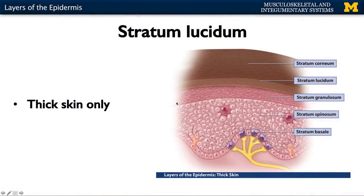In thick skin only, you have the stratum lucidum. This is a fairly nondescript layer, usually three to five layers of cells thick. It is composed of dead keratinocytes and is found only in thick skin — so only on the palms of your hands and the soles of your feet.